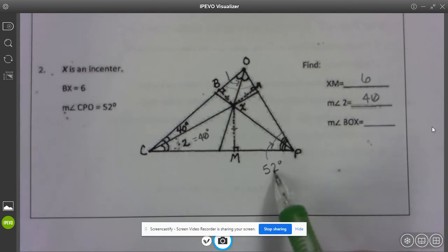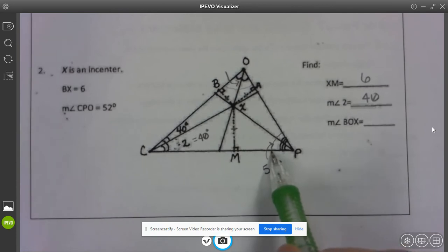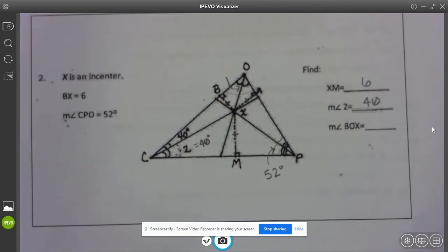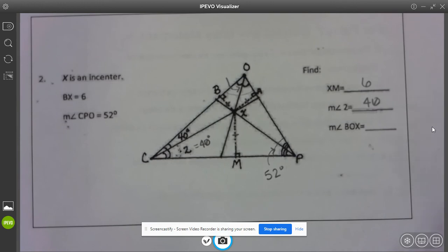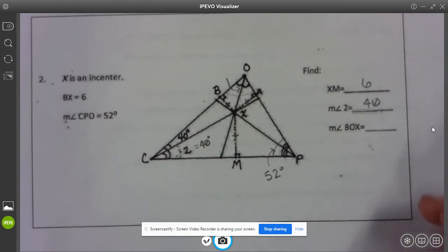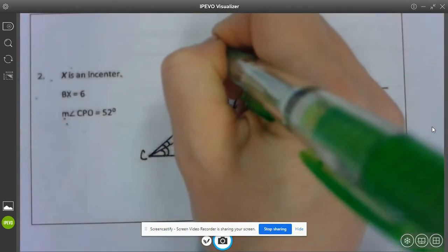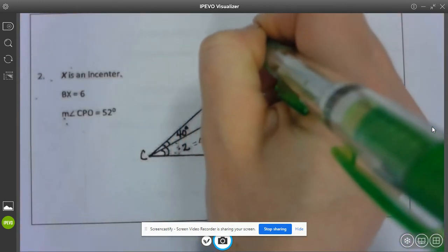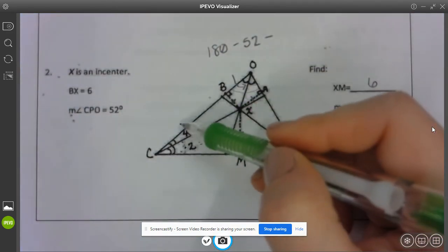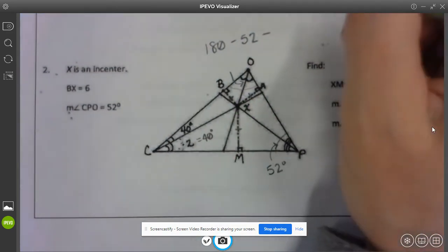180 not 360 Lord Bethany almighty. I promise my brain knows what I'm doing it's 180 because we're inside a triangle not a quadrilateral like yesterday. So I'm going to do 180 minus 52 minus this whole angle here is 80.